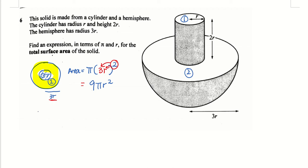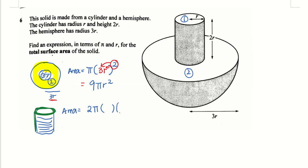Next, the curved surface area of the cylindrical portion is the circumference times the height: 2 pi r times the height. The radius here is r and the height is 2r. Simplifying: 2 times 2 gives 4, so curved surface area of the cylinder is 4 pi r squared.